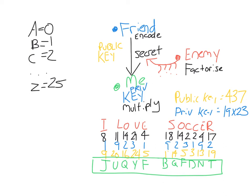I wouldn't be able to do that if I didn't know the private key. Without the private key, looking at the first letter J, I wouldn't have known that I shifted the original letter 1 spot up to get J, so I wouldn't have been able to shift it 1 spot back to get I. I need the private key to know how much each letter has been moved in order to decode the message. Without the private key, you can't do this. The public key of 437 is not an easy number to factorize because it's semi-prime.